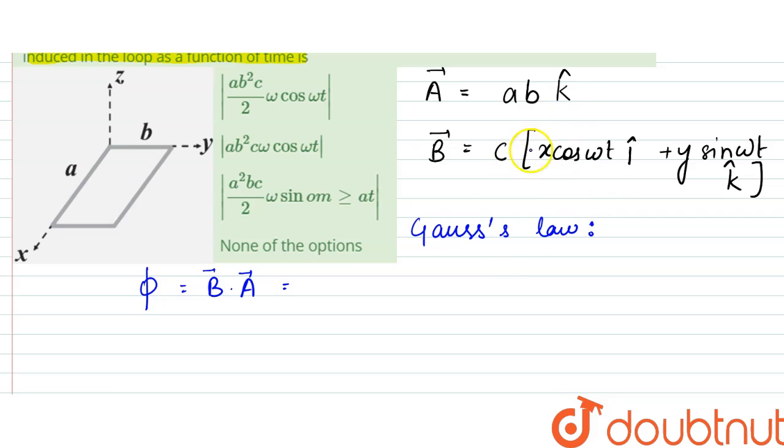So, only the vectors, the components along same directions would get multiplied. So this into this would be there. So it would be ABCY sine omega t and K dot K is 1.